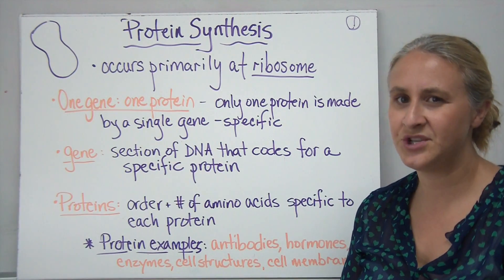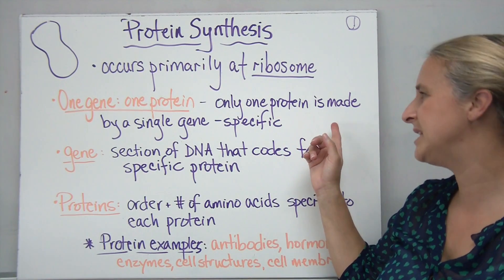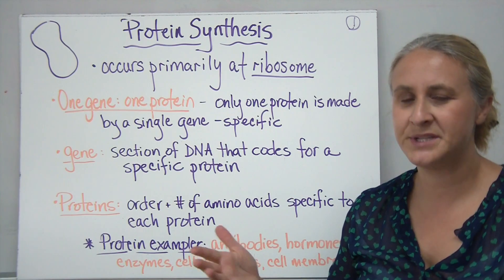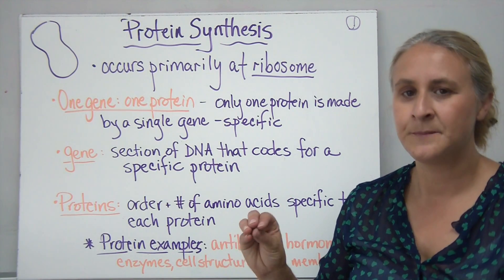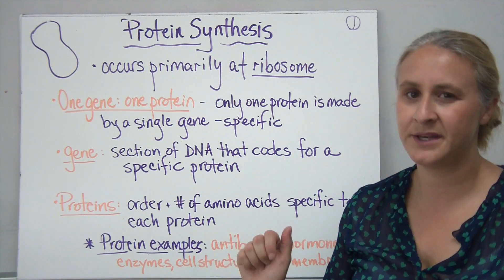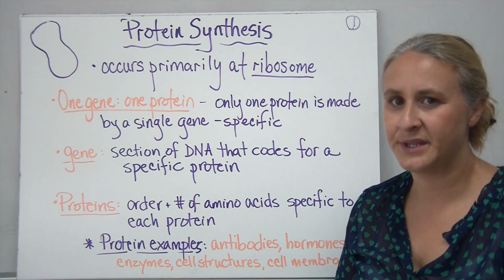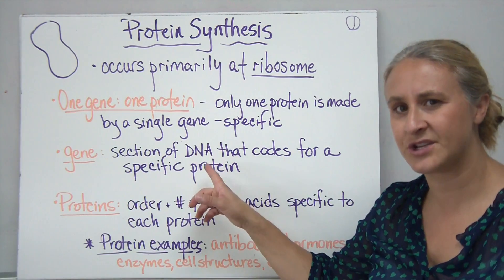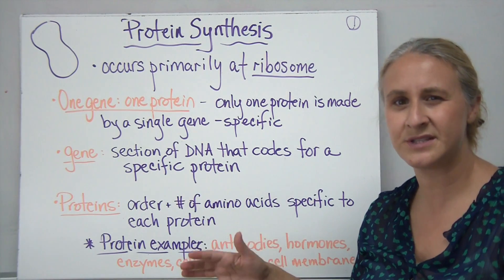This whole concept of one gene, one protein really means that only one protein is made by a single gene. So when we talk about a particular gene, like a gene that codes for hair color, that particular gene only makes one protein, and we'll see why that's important later on. The idea is that they're very specific for what they make.